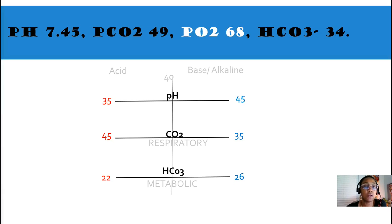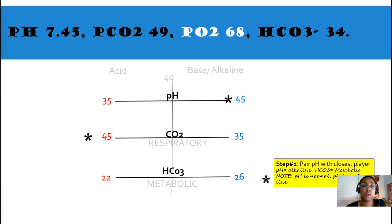Here's our next ABG. pH is 7.45. CO2 is 49. O2 is 68. And our bicarb is 34. CO2, 49. A little bit out of range. Bicarb, 34. Our closest player to the pH is the metabolic. It's on the same side. It's bicarb.